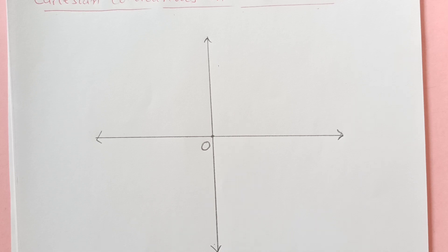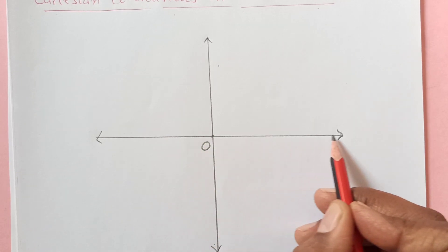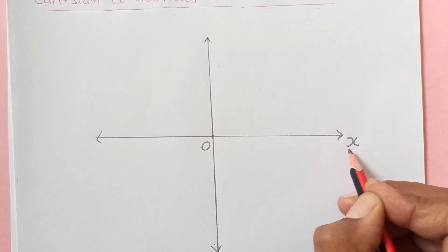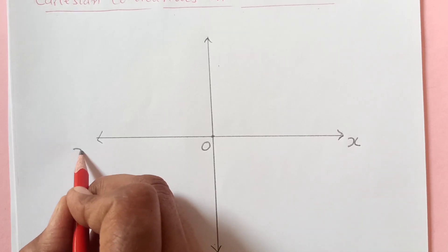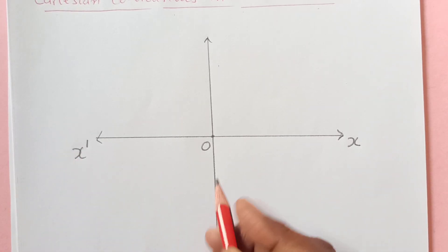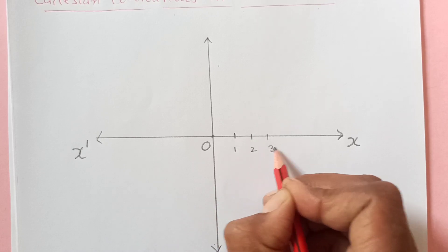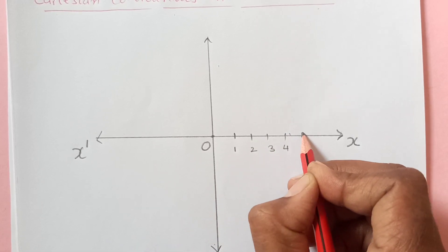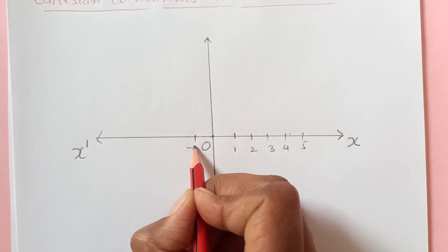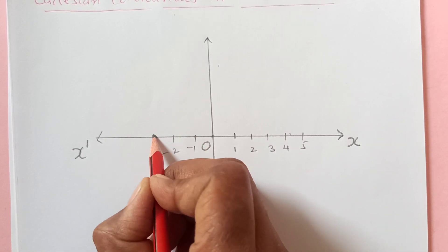Now here if you see that this side is x axis, positive x axis and left hand side is negative x axis. So we will have positive values this side like a number line 3, 4, 5 and so on. This side we will have negative values.